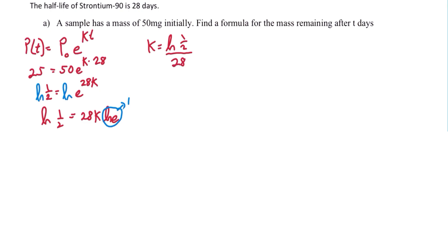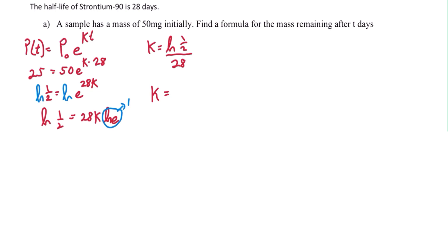If we wanted to simplify a little bit more, we can simplify the natural log of 1 half using log rules. So we get negative ln of 2 over 28.